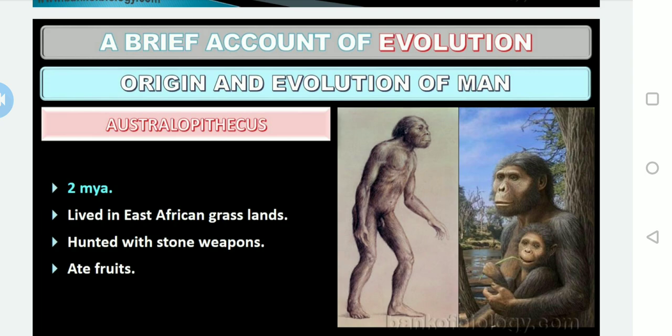Australopithecus hunted with stone weapons and had a habit of eating fruits. This man-like ape lived in eastern and southern African grasslands about two million years ago according to NCERT. The fossil evidence shows Australopithecus is intermediate between apes and man, and the probability is that man might have arisen from an Australopithecus-like ancestor. They are commonly known as the ape man.